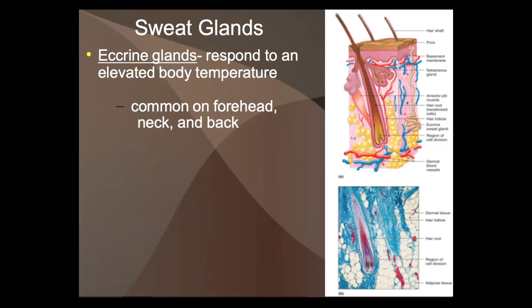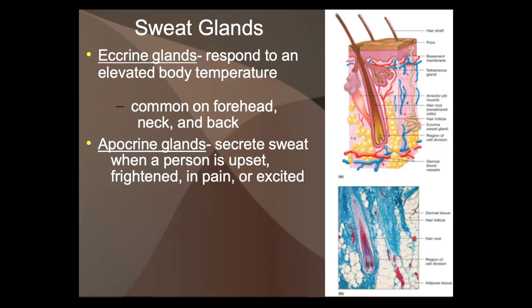Eccrine glands respond to a higher body temperature — these are sweat glands that respond to higher temperature and are common on your forehead, neck, and back. But we sometimes sweat when we're not hot — when we're nervous, excited, frightened, or in pain. There are different kinds of glands secreted for those situations, called apocrine glands, which are secreted when somebody is upset, frightened, in pain, or excited.